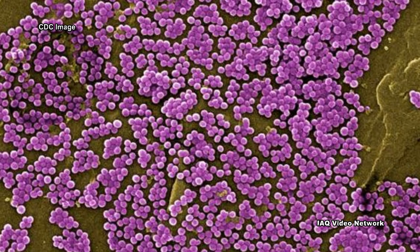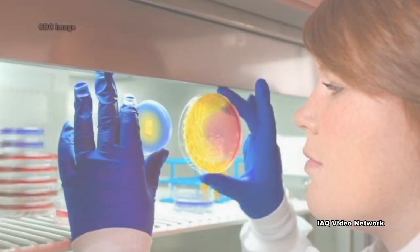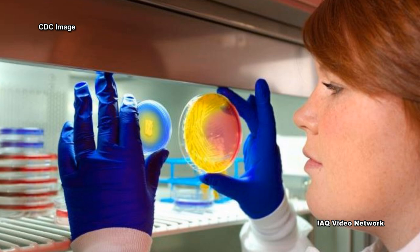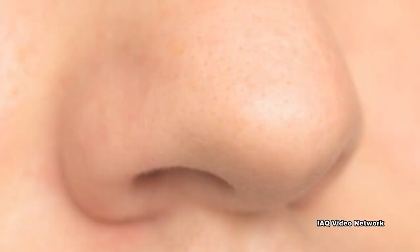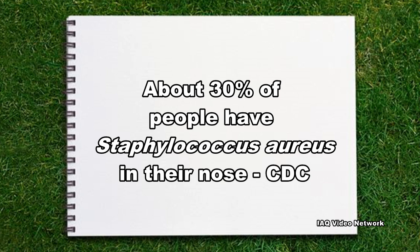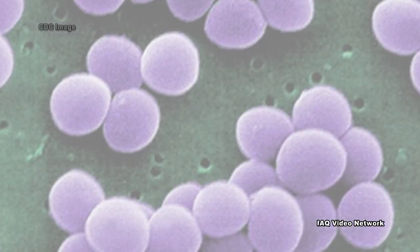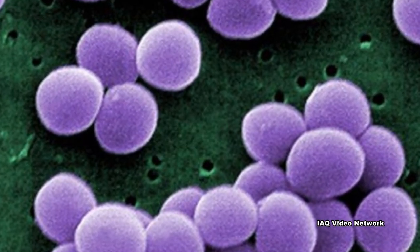Staphylococcus aureus, commonly referred to as staph, is a type of bacteria that has long been recognized as a cause of disease in humans. It is commonly found on the skin and hair as well as in the nose and throat of people and animals. According to the Centers for Disease Control and Prevention, about 30% of people carry Staphylococcus aureus in their noses. Although most of the time it does not cause harm, it can sometimes cause infections.